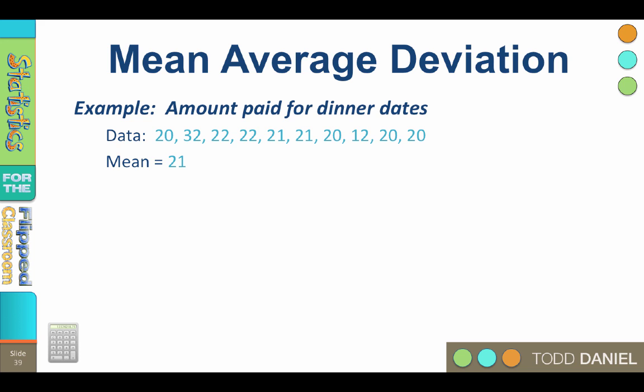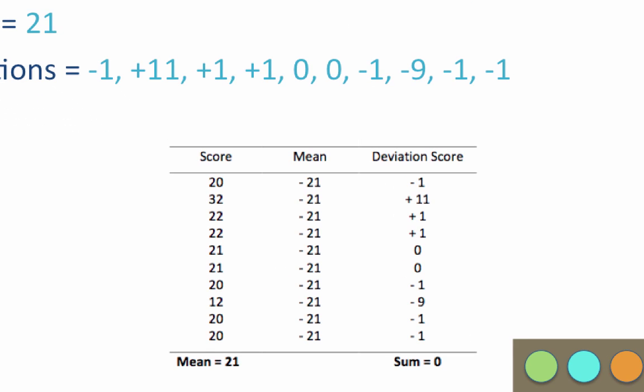Now subtract the mean from each data point, and here are the deviation scores. Let's put them into a table so that we can add up the sum of the deviations.